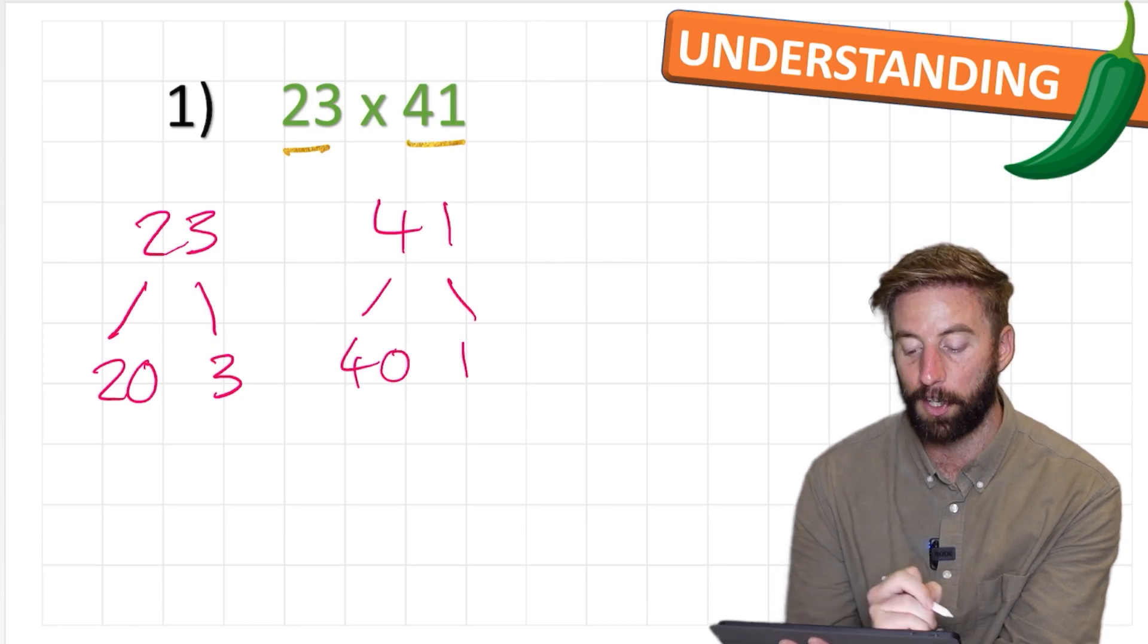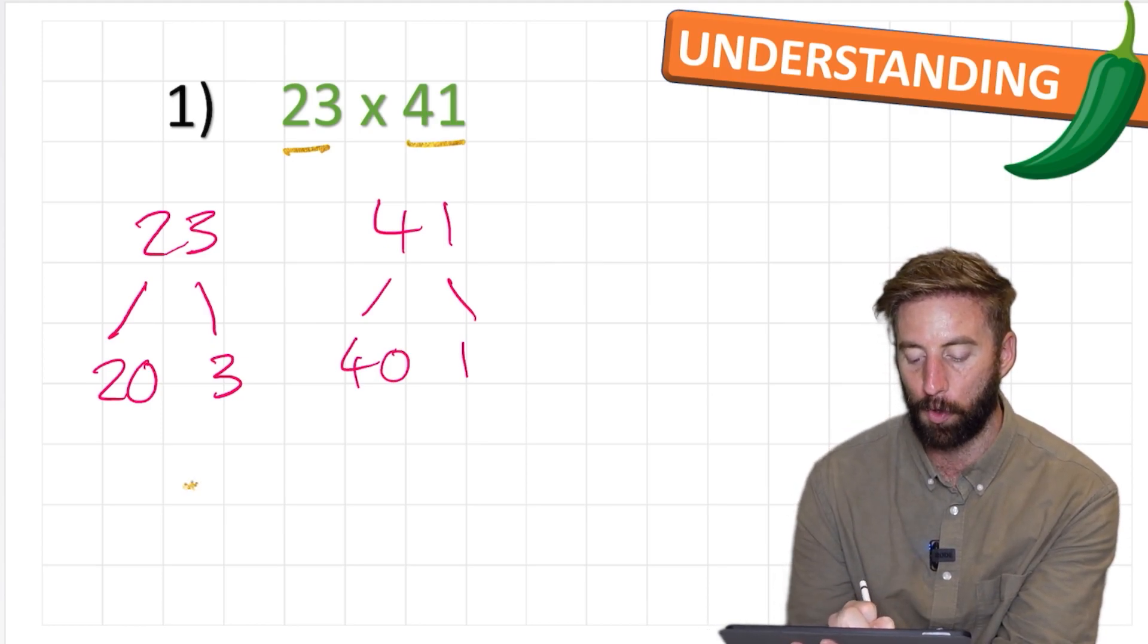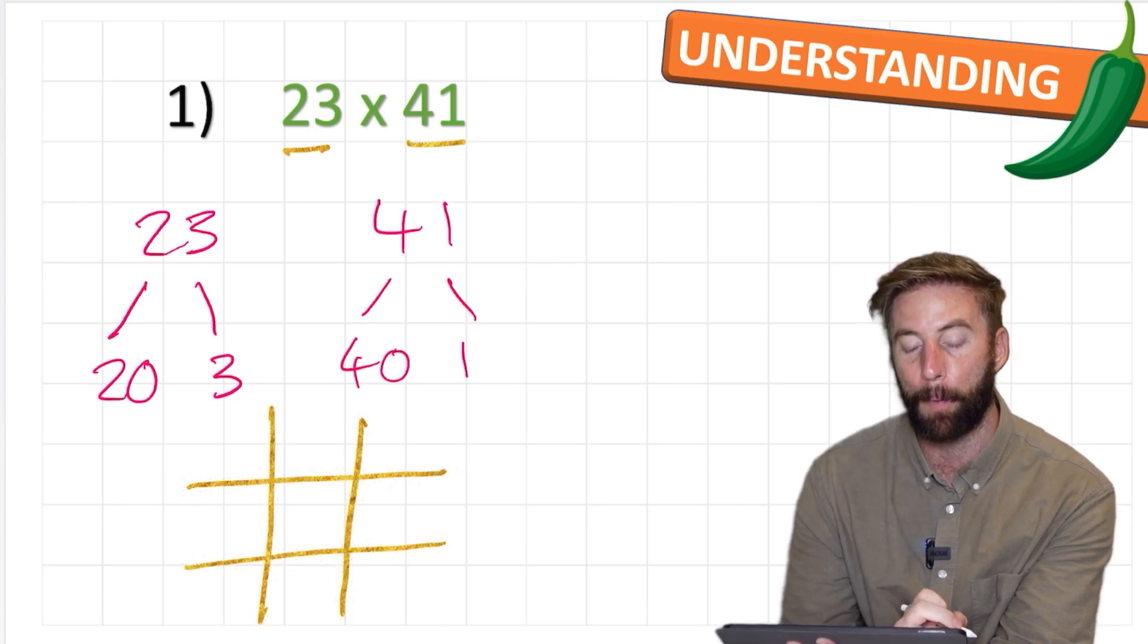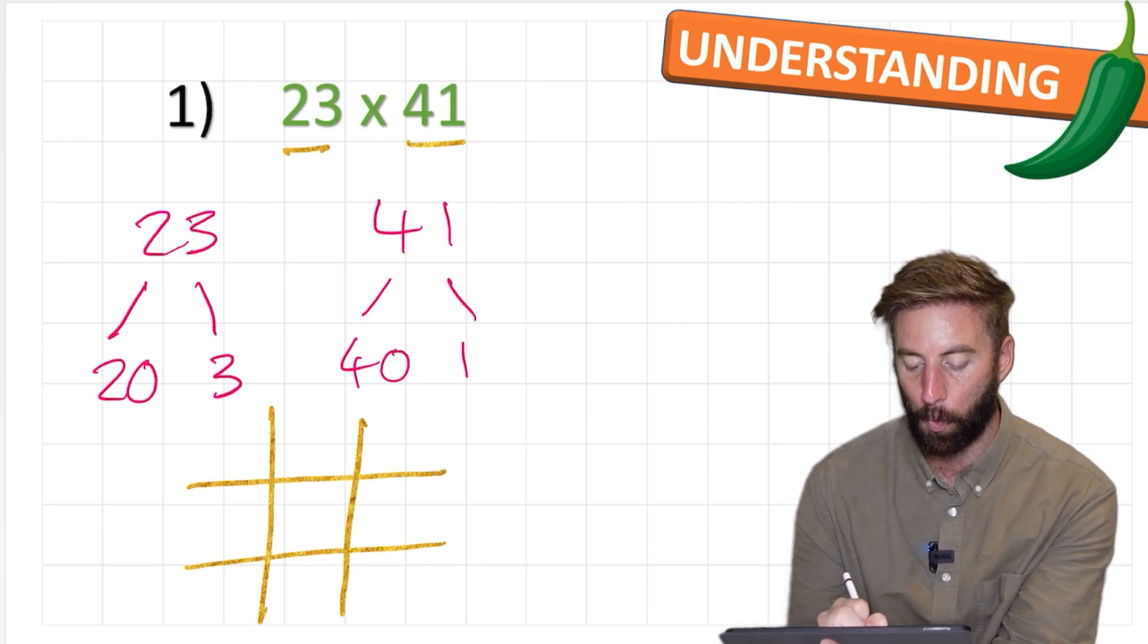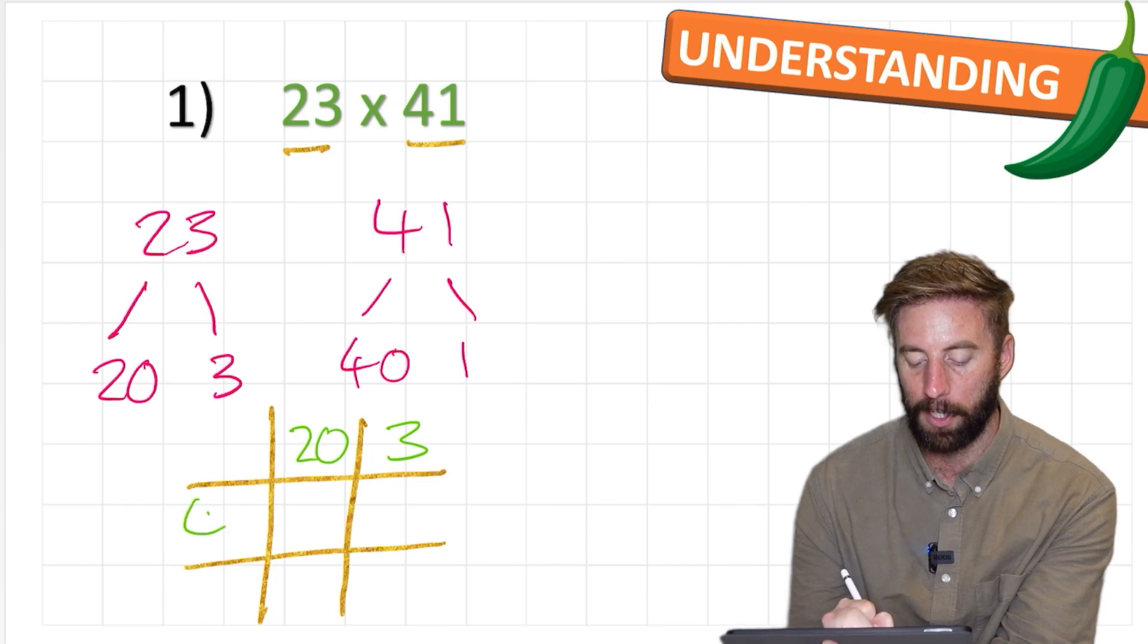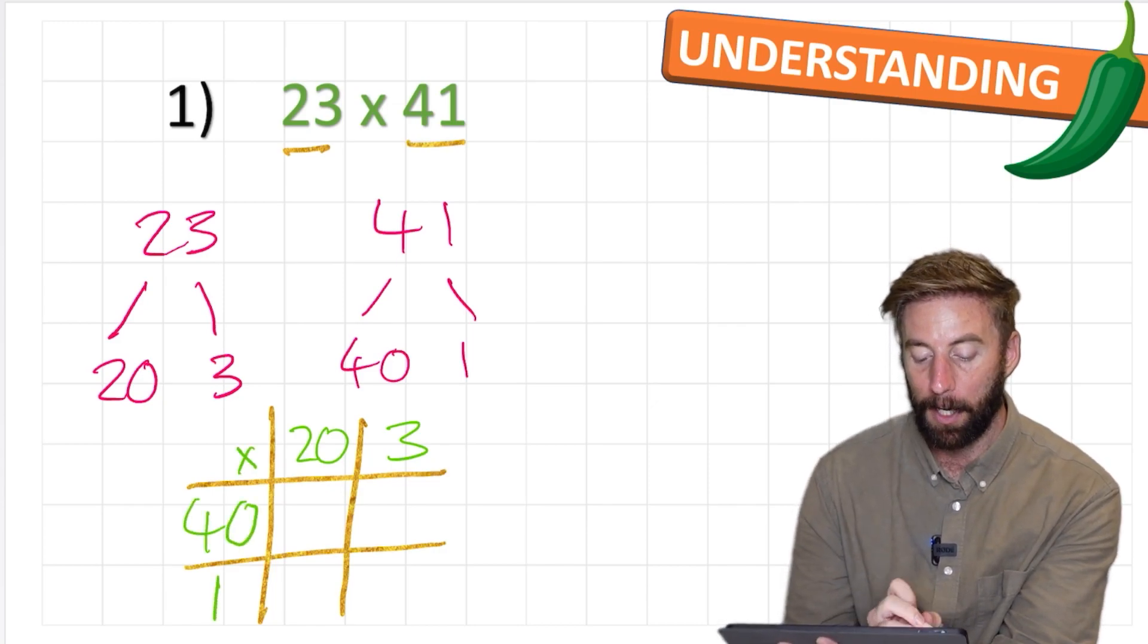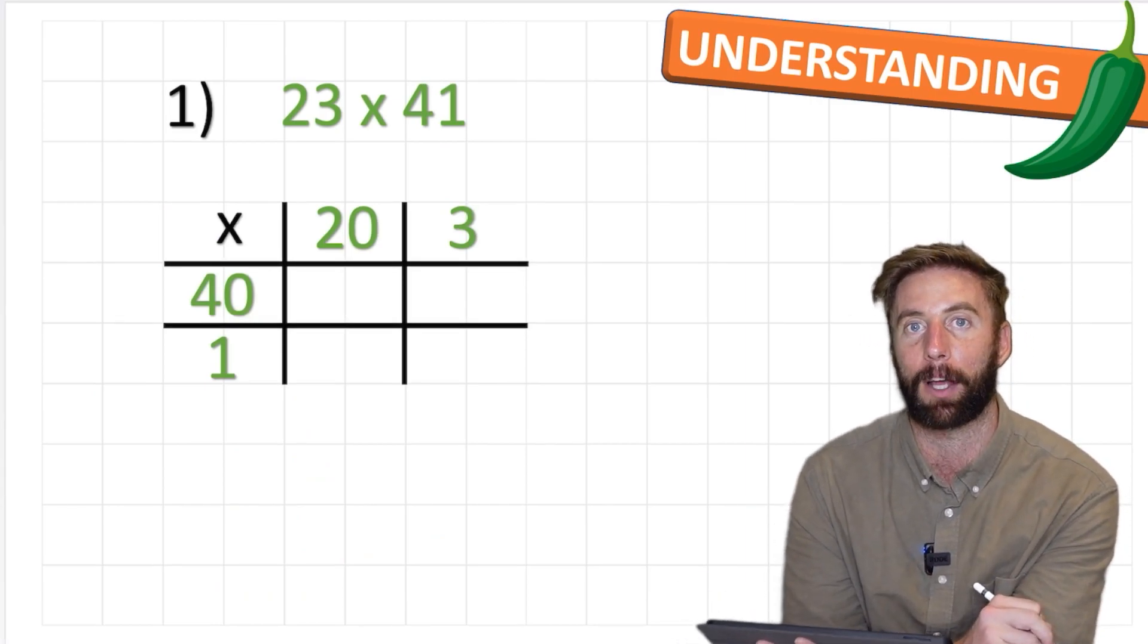Once we've done that we can make our grid. My question was a two digit number by a two digit number, so therefore my grid will be two lines by two lines. Now simply I'm just going to put my numbers in place in the partitioned form. So 23 and 41, put the multiplication sign, and let's tidy this up.